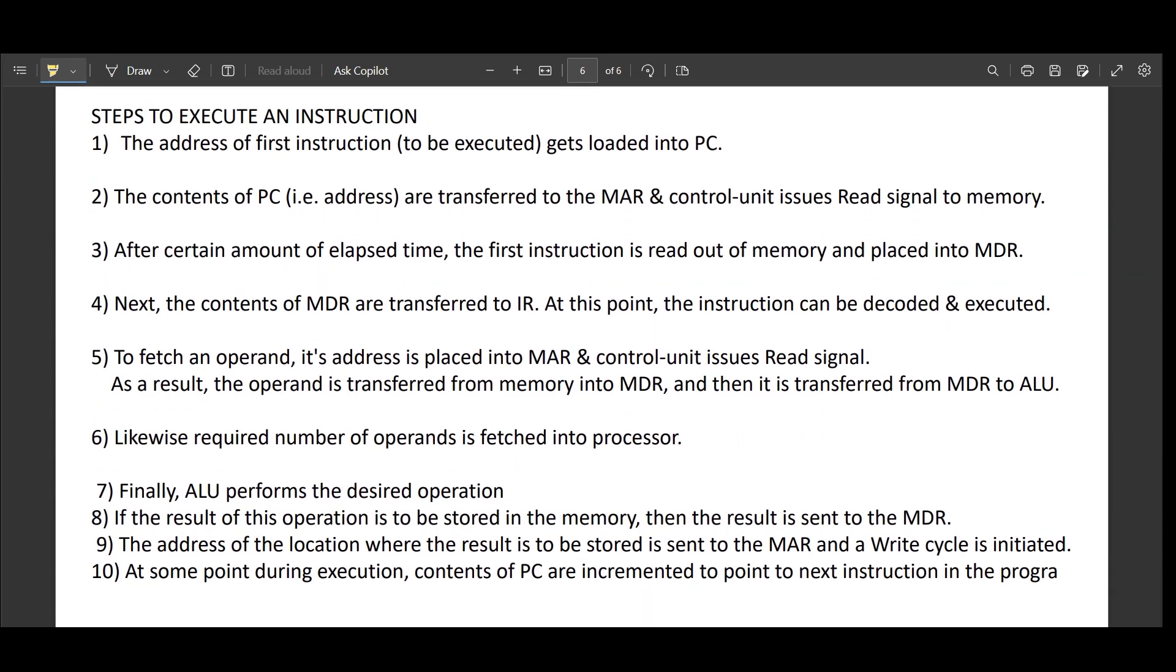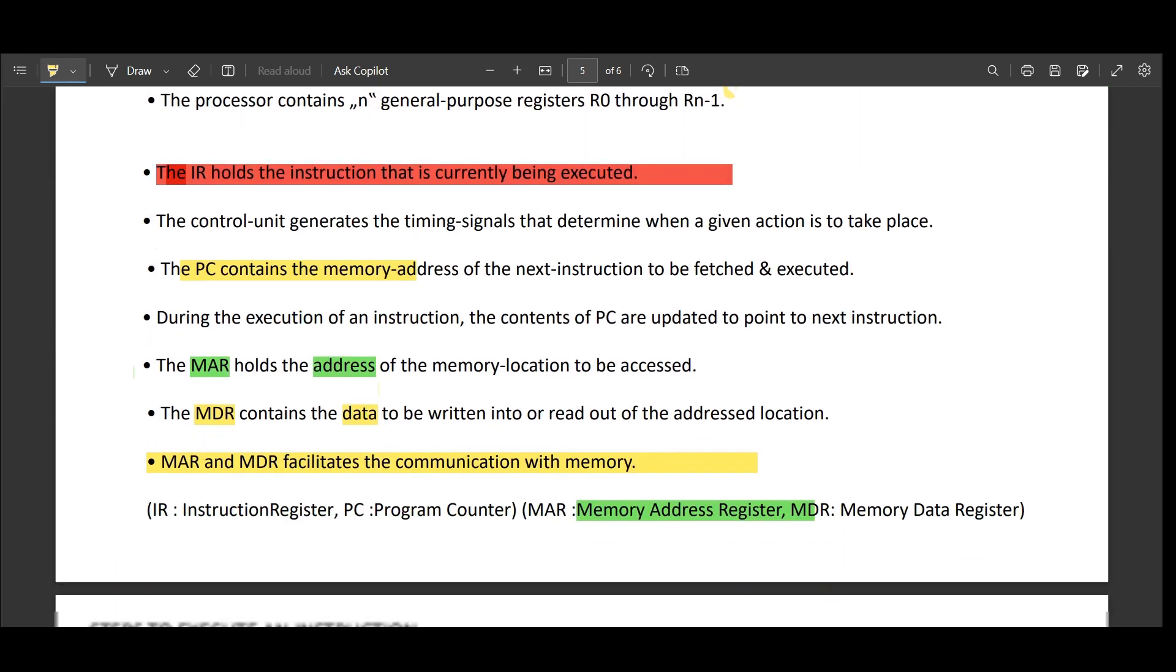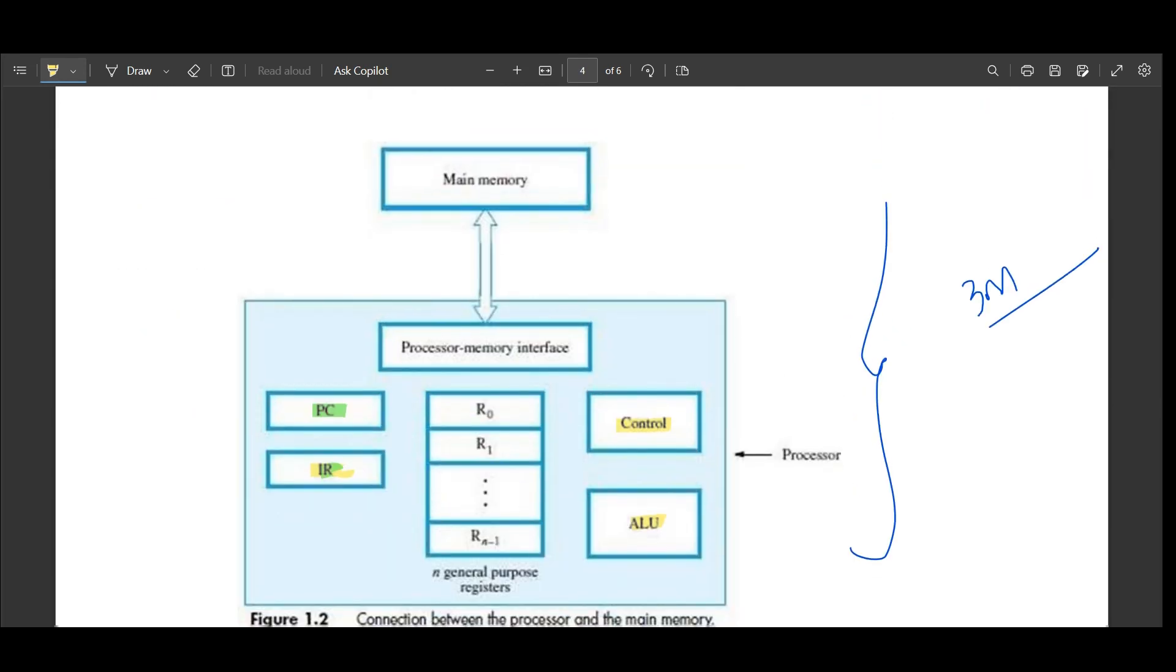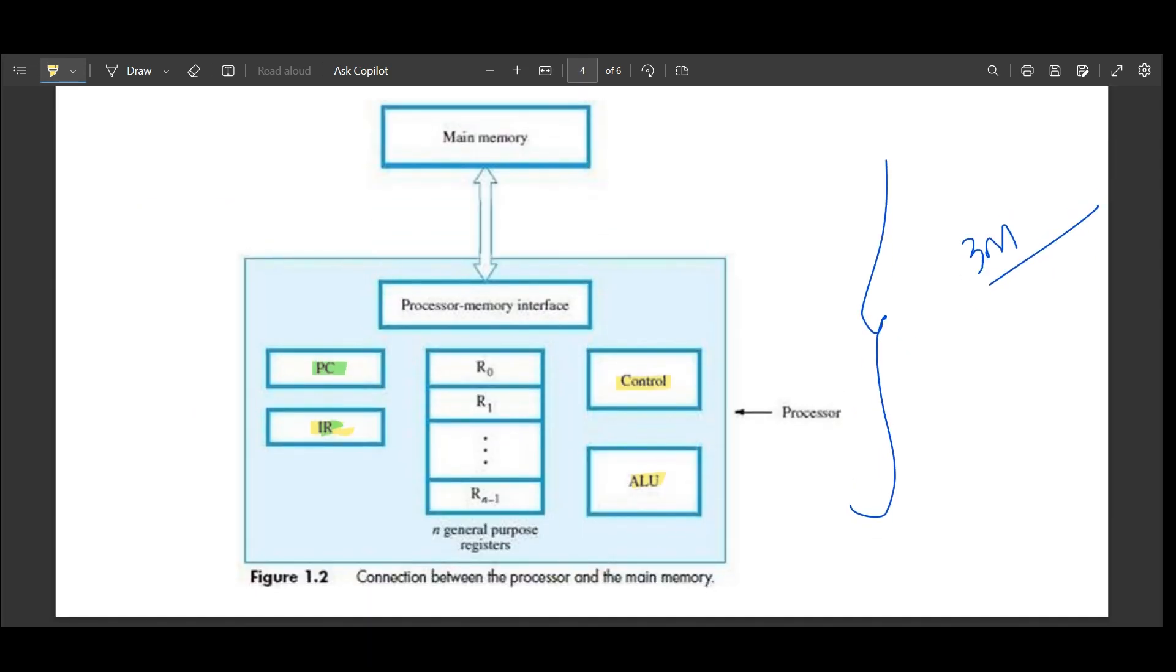Next, steps to execute an instruction. What are the steps that are required to execute an instruction? There are almost 10 steps which I will make it easy for you all in the next video. In this video just understand the main parts of the processor and this diagram. In the next video we will continue with part 2. Thank you.